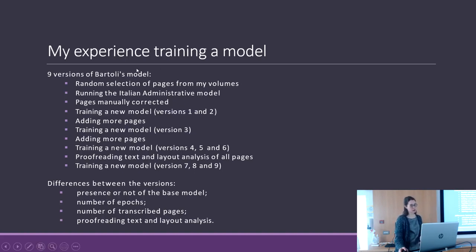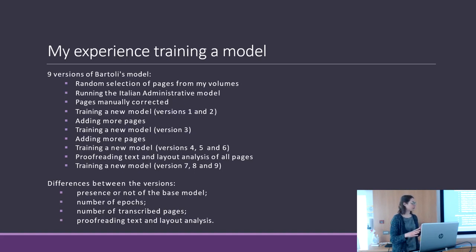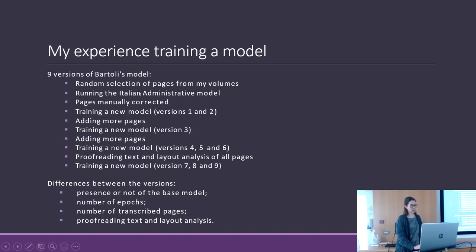The first step was to randomly select pages from my volumes — important because I want different examples of hands from different periods. Not only pages from one volume, because my documents cover 10 years and the first years look quite different from the last. Then I ran the Italian Administrative model on these pages.